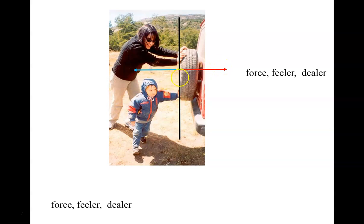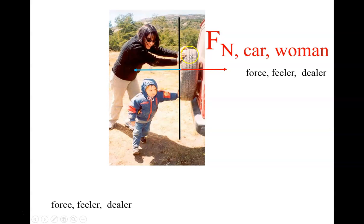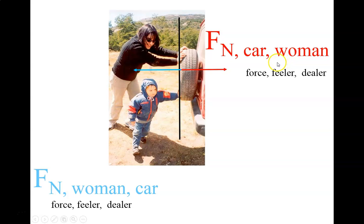Here we've got a woman and a boy pushing on a car — we'll just look at the woman. It'd be a normal force, a contact force. The Newton's third law force is an equal and opposite force on the woman by the car. If I asked you which object has the greater force on it — woman or car — it would be the same. Newton's third law forces are the same in magnitude and opposite in direction. One force is on the car, the other force is on the woman.